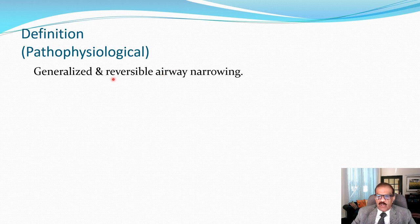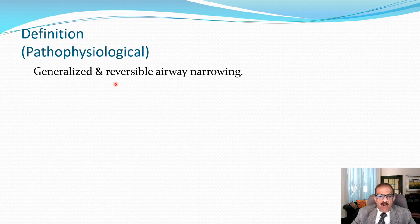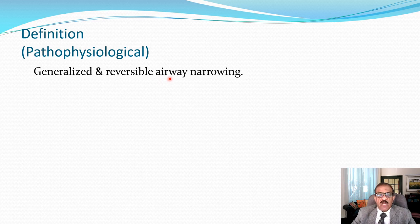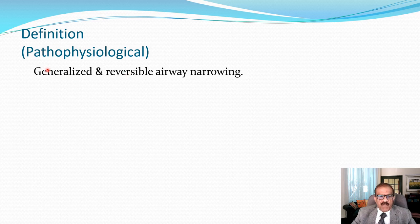From a pathophysiological standpoint, asthma is a disease characterized by generalized and reversible airway obstruction. Both lungs are affected — it's not a disease of one lobe or one lung. The involvement is of the entire pulmonary structure, and the airway obstruction is at least theoretically or potentially reversible. This differentiates it from other obstructive airway diseases where narrowing is not reversible. If obstruction is significantly reversible, it is called asthma; if not reversible, it's another condition.